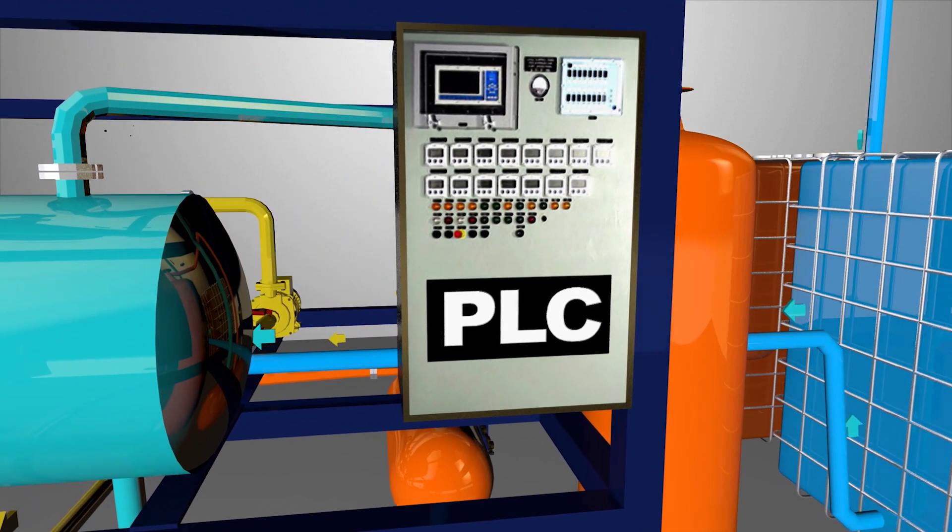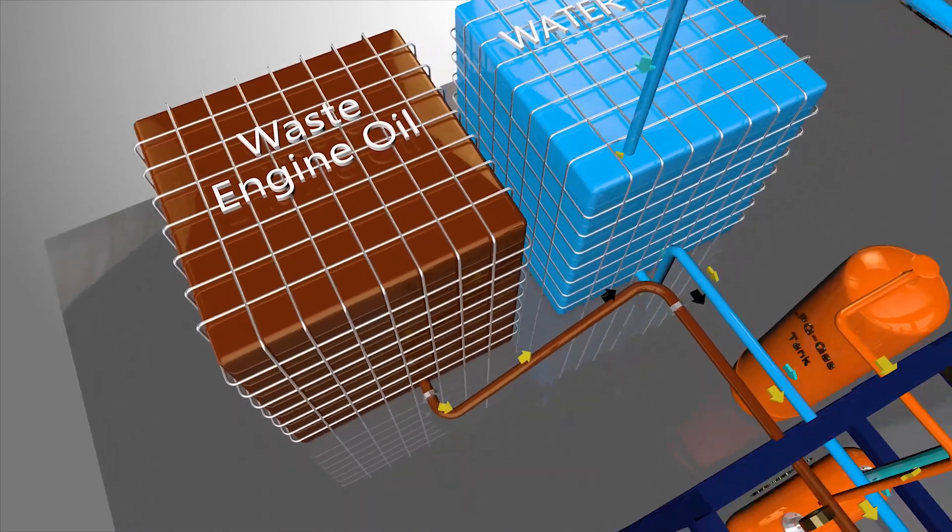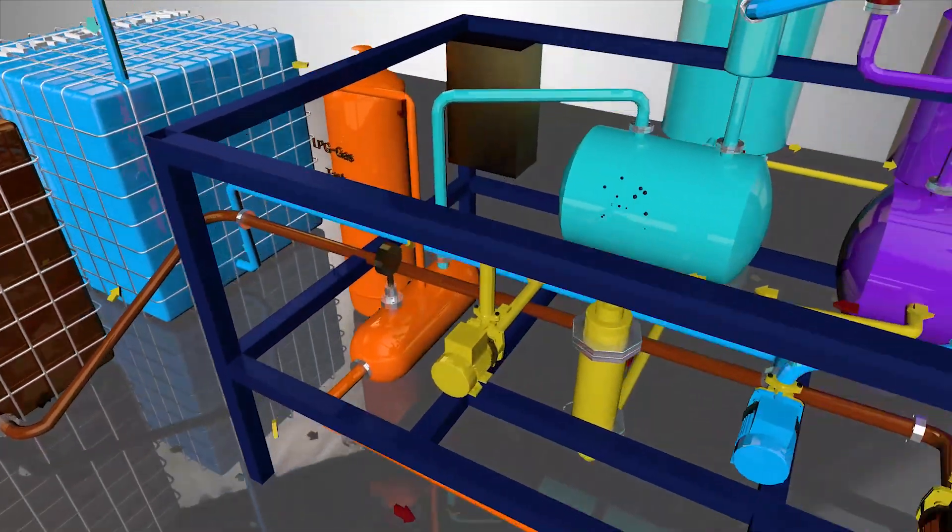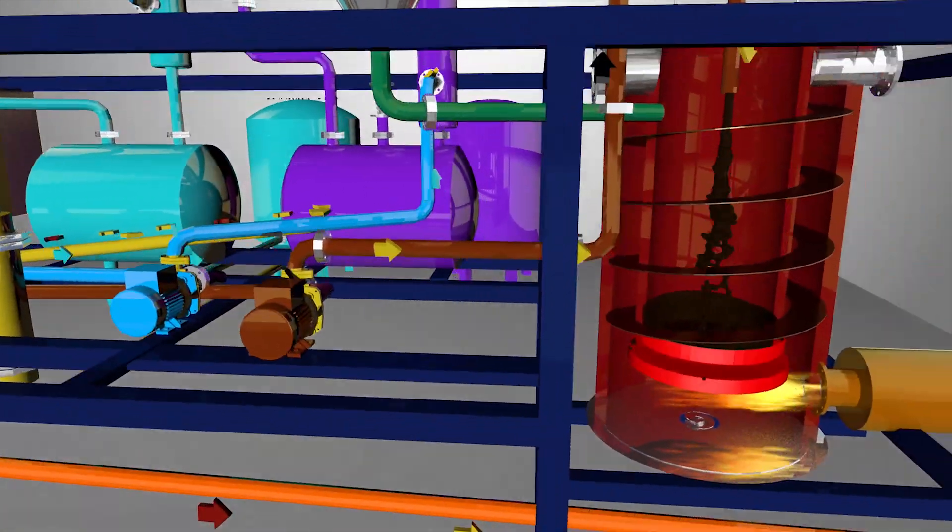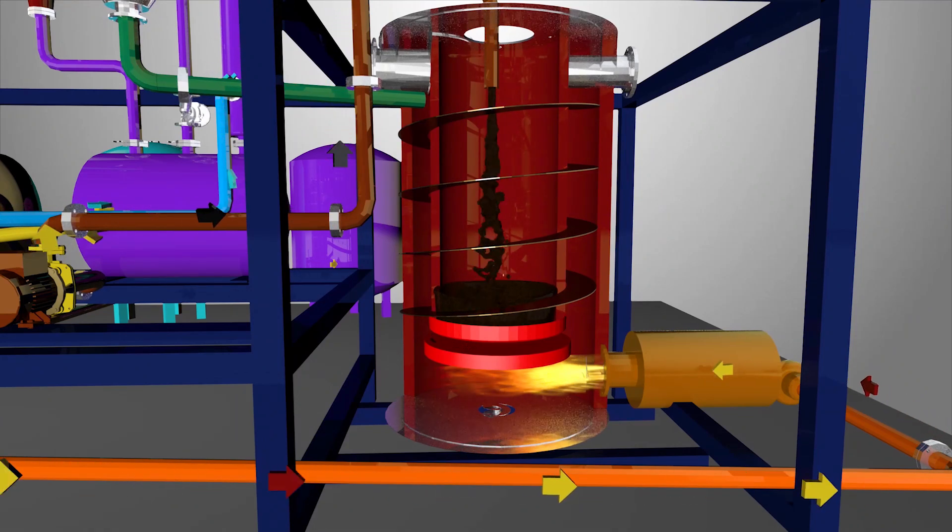As soon as the first batch is pyrolyzed, more waste motor oil can be pumped into the reactor at the rate of 40 liters per hour. Therefore, about 250 liters of waste motor oil can be pyrolyzed daily.